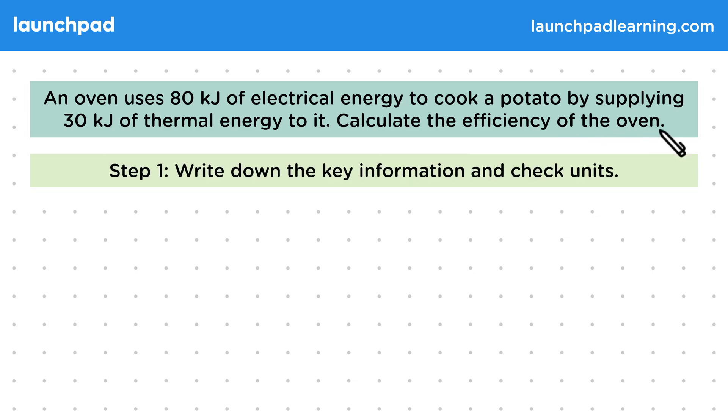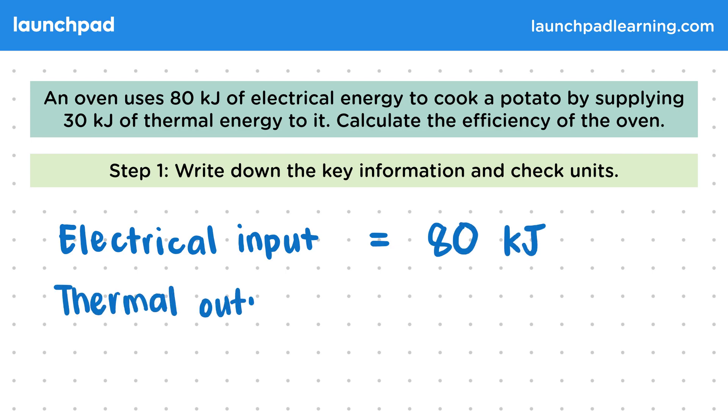For the first step, we're going to write down the key information and check the units. We have an electrical input equal to 80 kilojoules and then a thermal output or useful output of energy equal to 30 kilojoules. We want to calculate the efficiency of the process. In this example, both the input and the output energies are given in kilojoules, so we don't need to change the units as they're the same as one another.